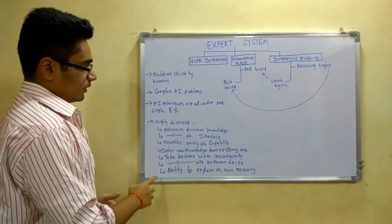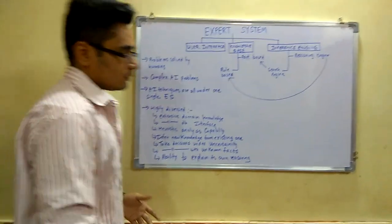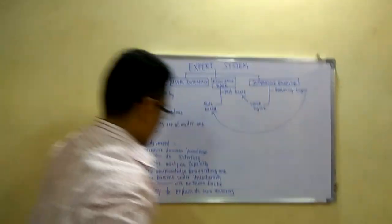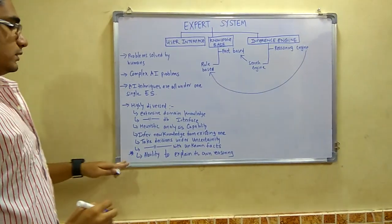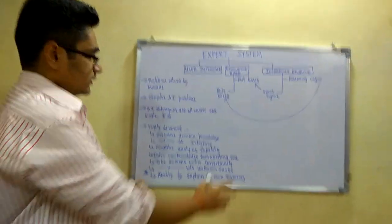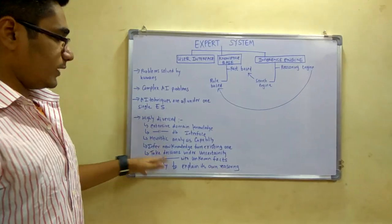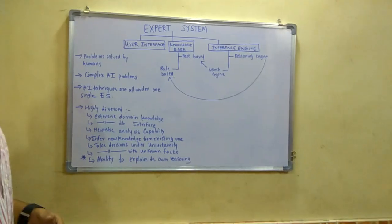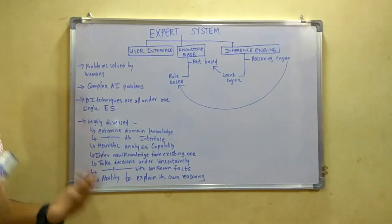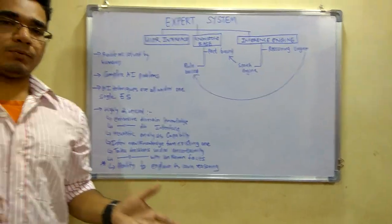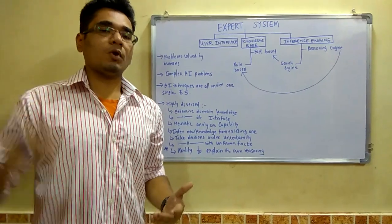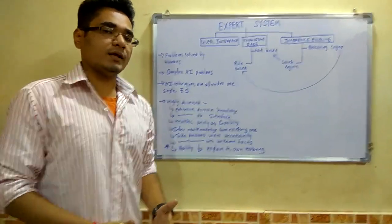The most important thing is the ability to explain its own reasoning. This is the crucial thing about expert systems. The expert system will have a set of rules by which it solves a particular problem. After providing the solution, it should be able to explain how it solved the problem and what parameters it took.